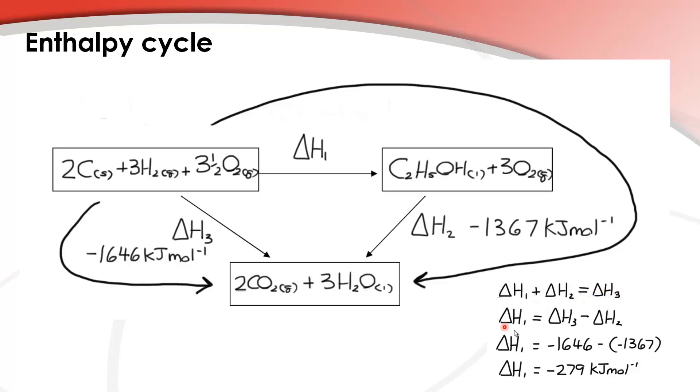Well we want to know ΔH1, so I can take ΔH2 over the equal sign to the other side, and that gives us the second calculation here: ΔH1 equals ΔH3 minus ΔH2. And if we plug in the values here, we end up with ΔH1 and that equals negative 279 kilojoules per mole.